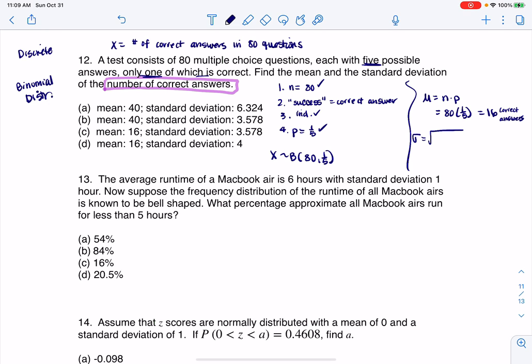If I want the standard deviation, it's the square root of np(1 minus p). So in this case, that's the square root of 80 times one fifth. And the complement to that is four fifths. And when you crunch that on your calculator, you get 3.578. And the units on that would also be correct answers.